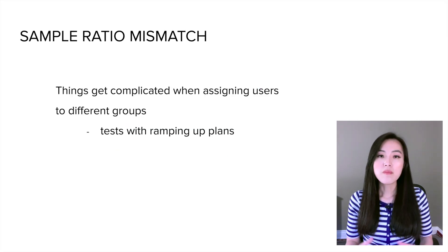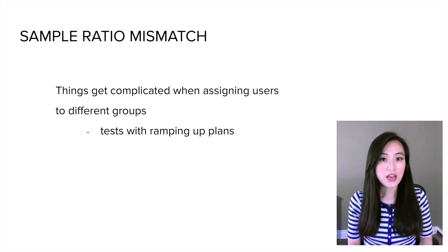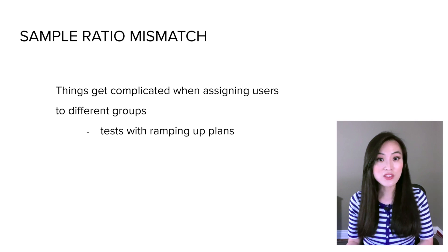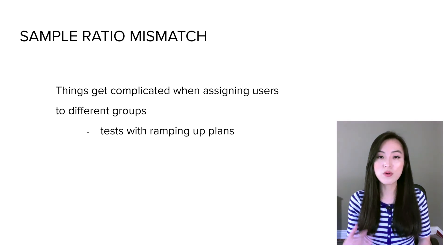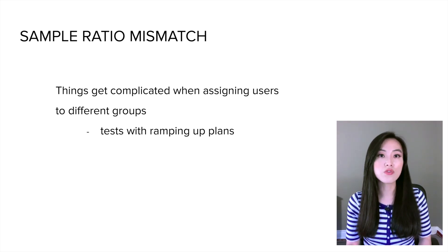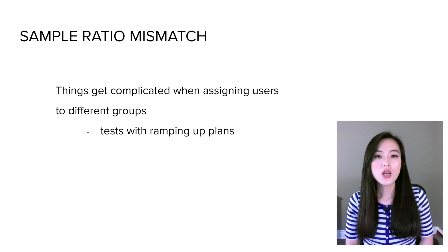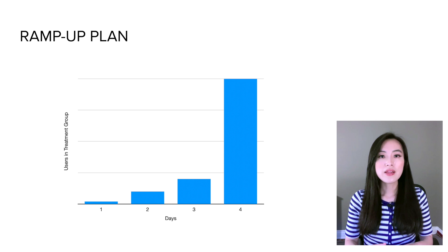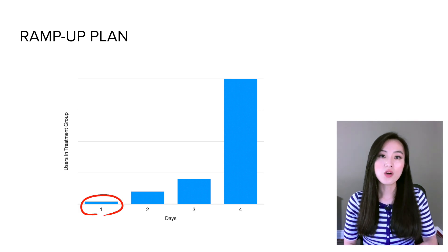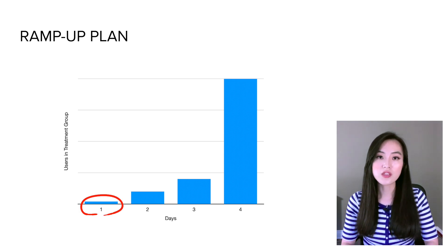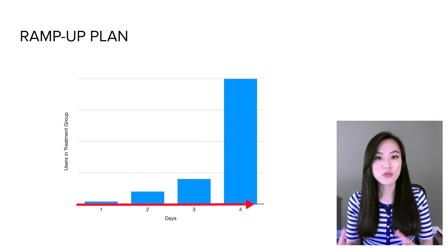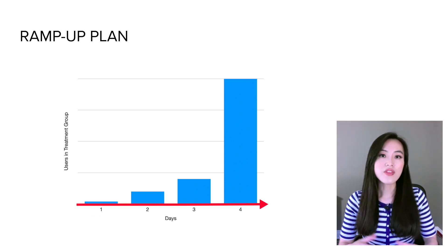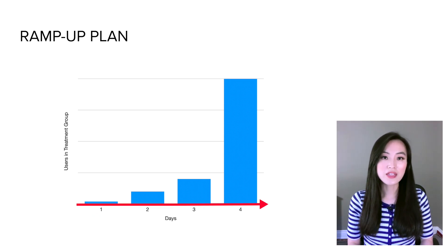For example, many experiments have ramping-up plans to make sure there's no risk when exposing users to a new feature. The ramping-up plan typically starts with assigning only a small percentage of users to the treatment group, then gradually rolling out to more users — and that can complicate the assignment of users.